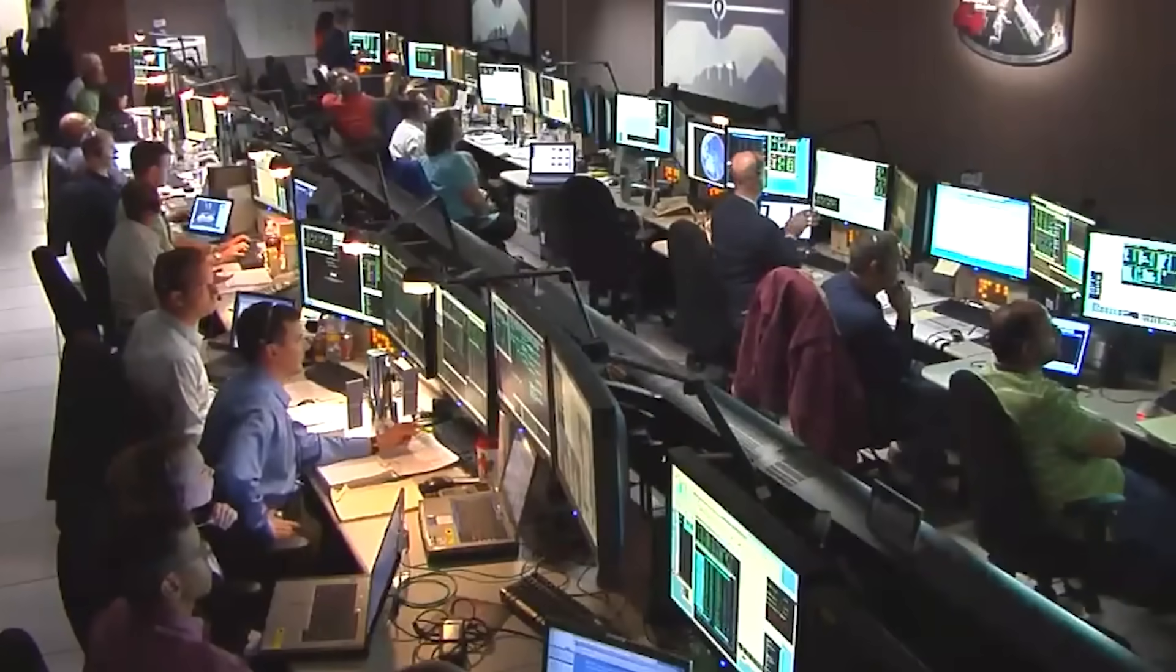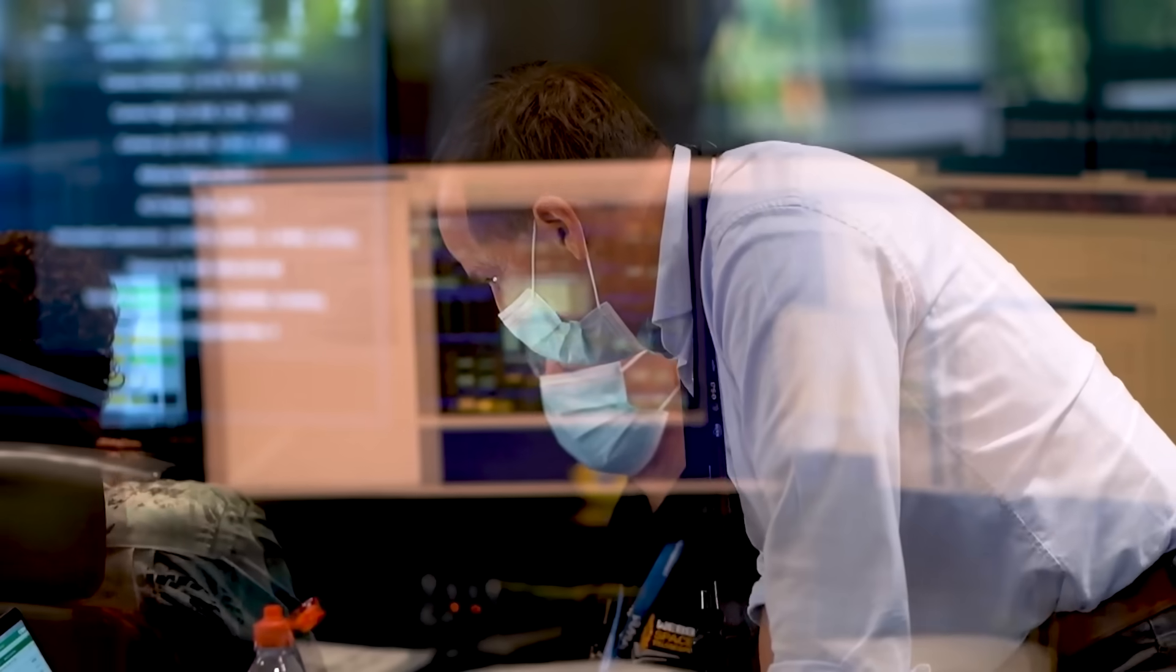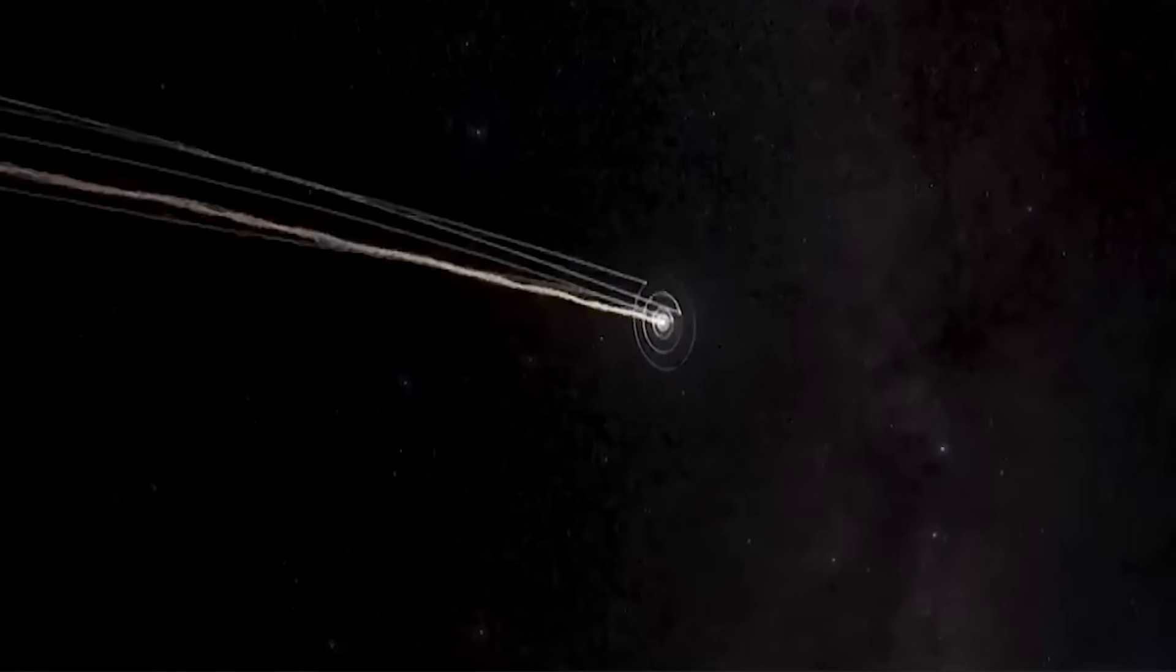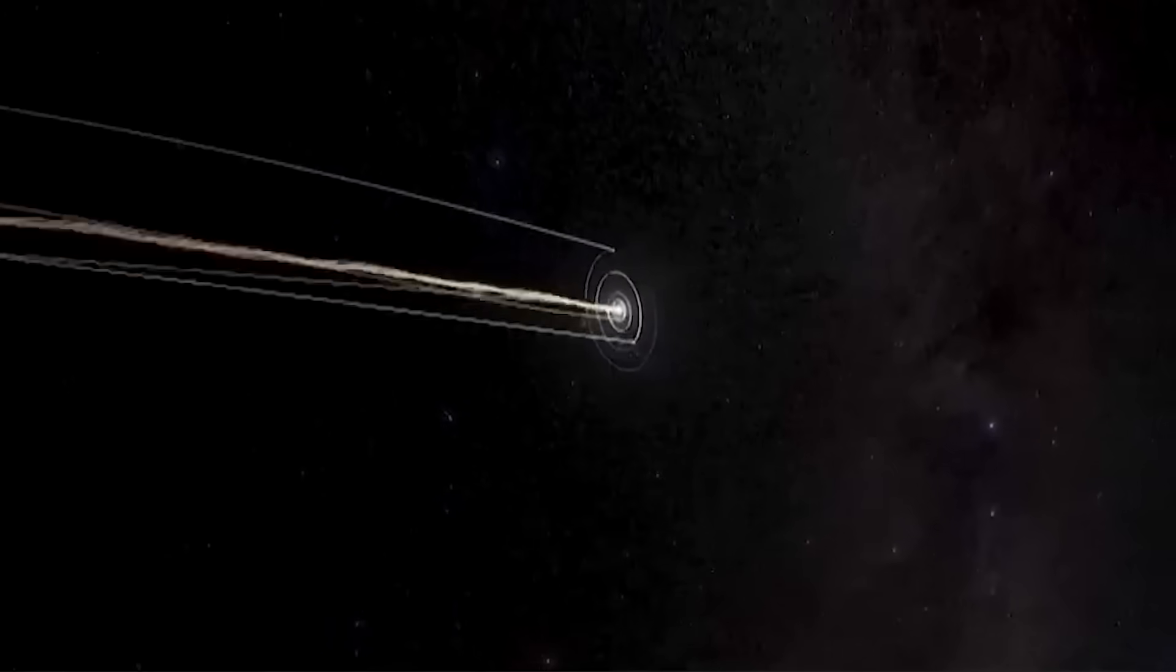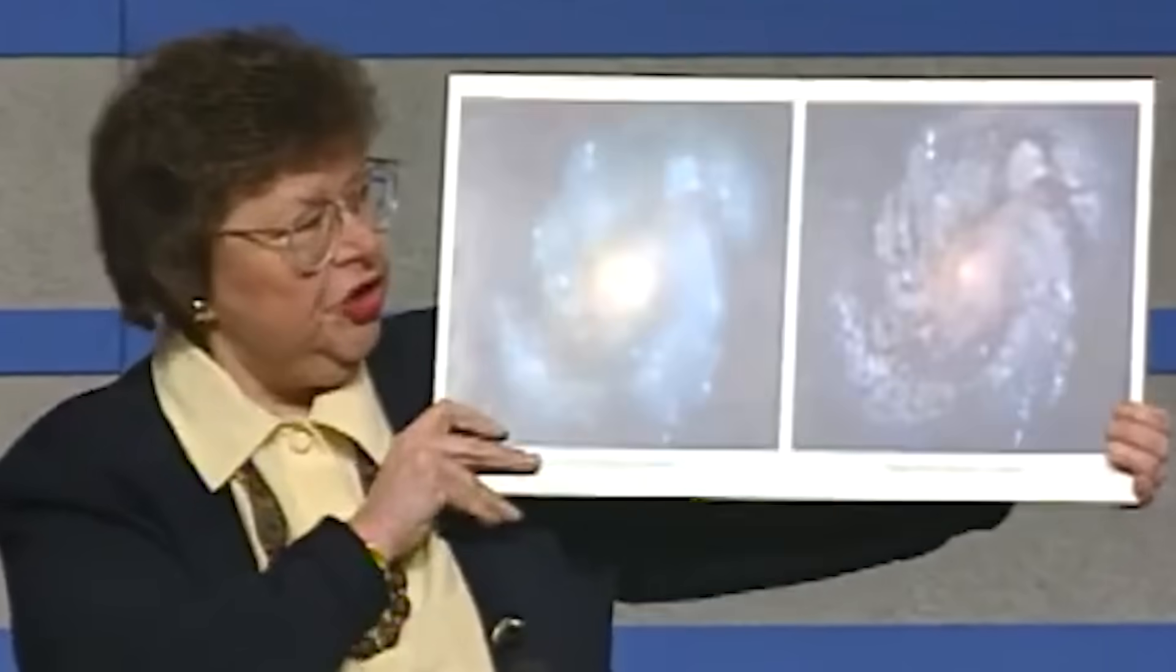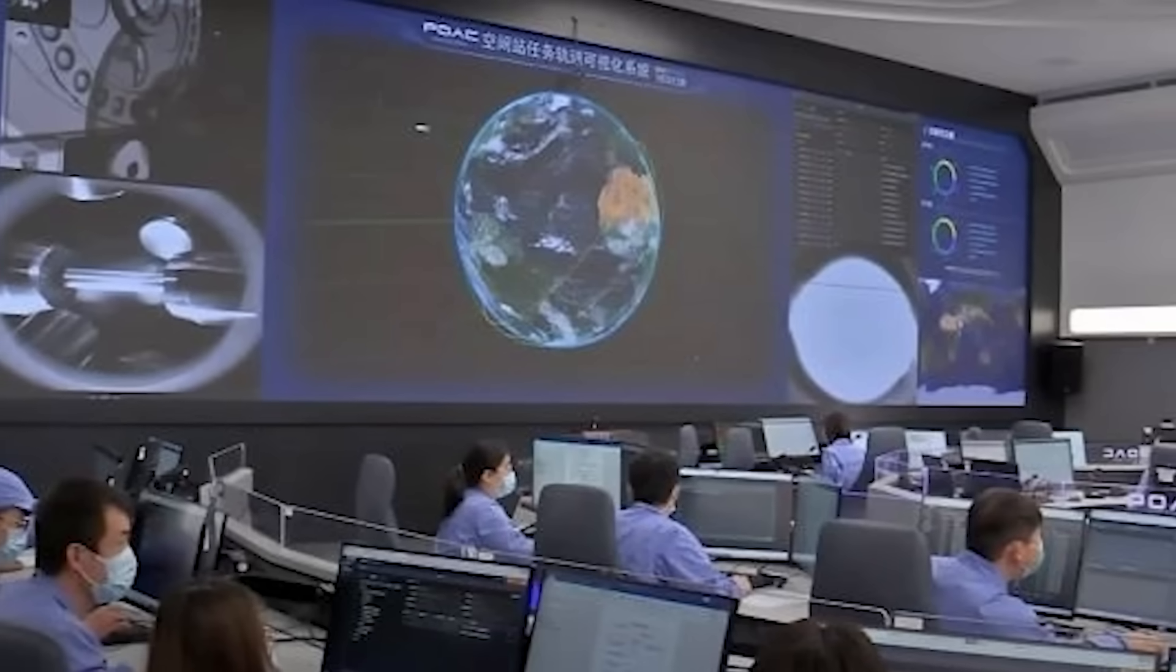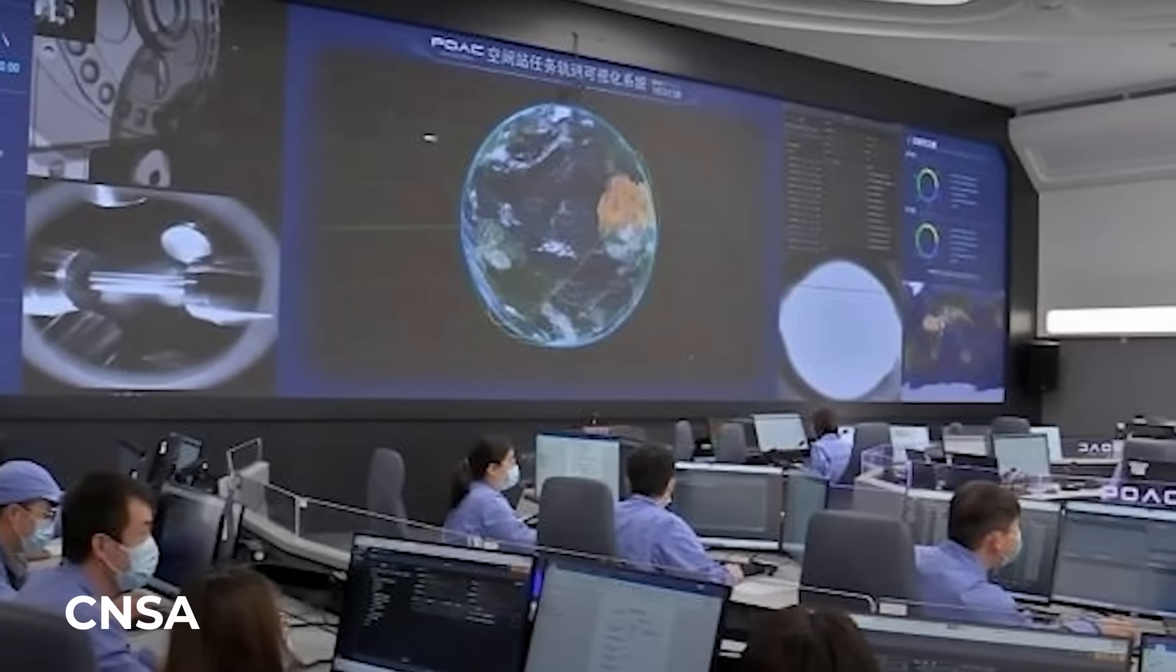This is, of course, speculative. The facts are that there is no consensus among scientists that 3i/Atlas broke apart. It is only a hypothesis. From a neutral point of view, it is clear that the object is extremely unusual. And as expected, the CNSA has now entered the scene.